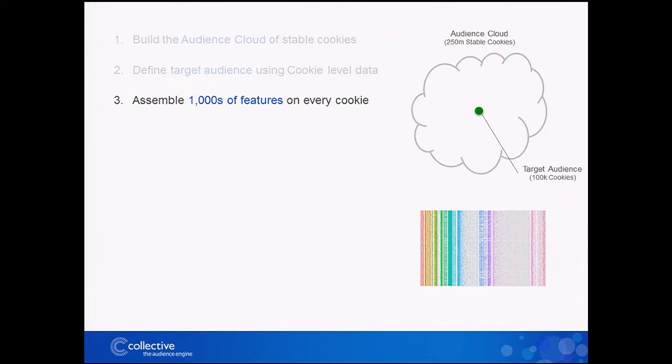The most important piece is assembling what we call the model matrix — literally thousands of features available on every single user. It's a giant sparse matrix with 250 million rows and thousands of columns. We then build predictive models using machine learning. We have all of this predictive data and the target we want to optimize towards. We tend to use something called elastic nets — regularized generalized linear models — which perform very well at scale with sparse data.